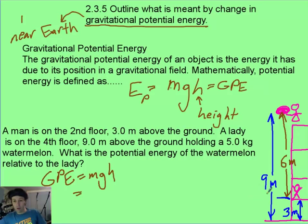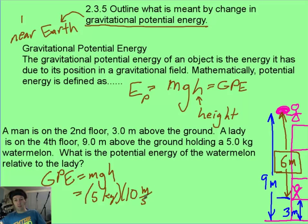Now if you drew a picture, which I hope you did, then you probably realize that the main number that matters is that watermelon is 6 meters above where that guy is. And so when we go to solve our problem, the mass of the watermelon was 5 kg, we've got acceleration due to gravity 10 meters per second squared, and we've got our height of 6 meters. And that's going to give us 300 joules, and we're going to call it positive.